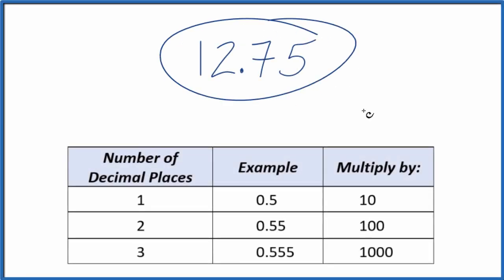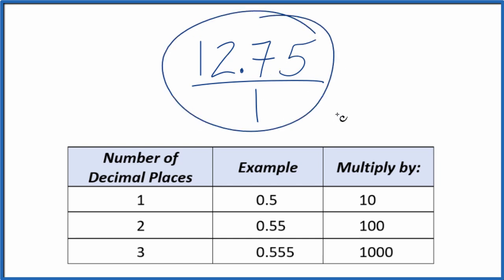Let's write 12.75 as a fraction. So let's first call it 12.75 over 1. It's still 12.75, we're just dividing by 1, but now we have the start of a fraction.